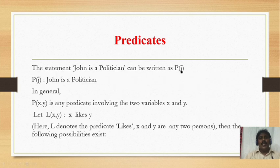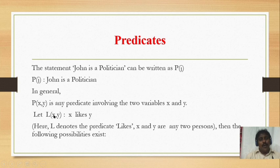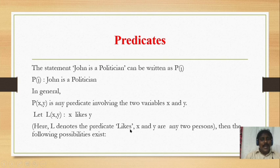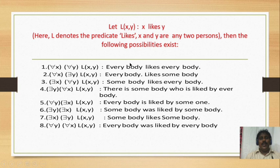For example, l(x, y) means 'x likes y.' Here l denotes the predicate 'likes,' and x and y are the two arguments — who he likes is x and y. Now we will see some of the possibilities that exist in predicates using quantifiers. So: l(x, y) means x likes y, where l denotes the predicate 'likes' and x and y are two variables.